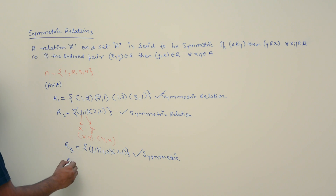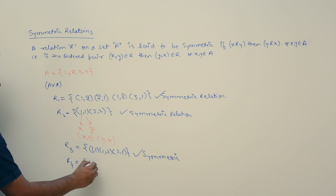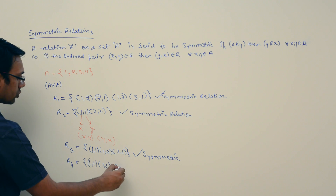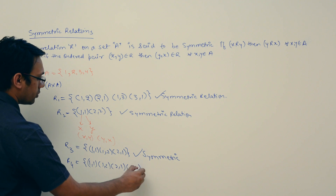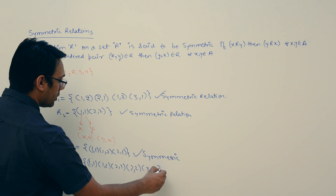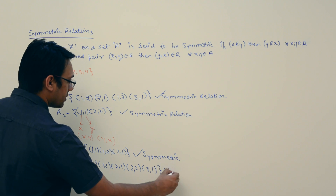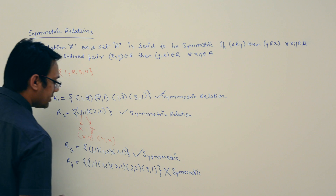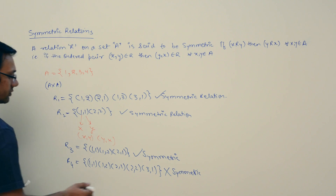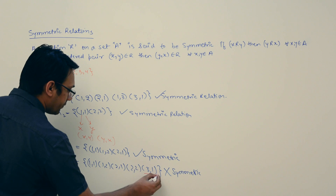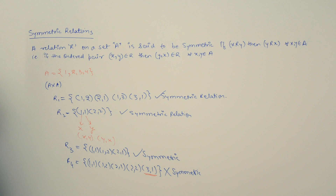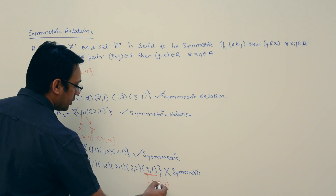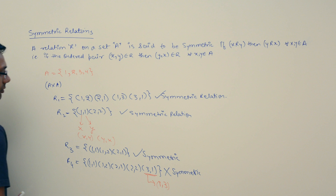If I have a relation R4 which is equal to {(1,1), (1,2), (2,1), (2,3), (3,1)}, this relation is not symmetric. Why? Because if we have (3,1), then for the relation to be symmetric we should have (1,3), but (1,3) is not present.